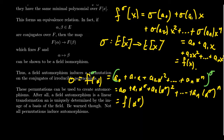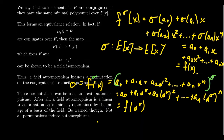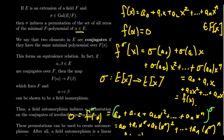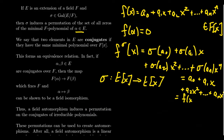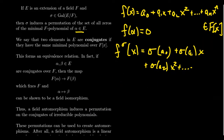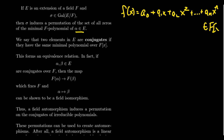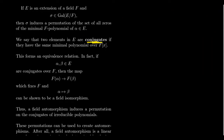So sigma induces a permutation on the roots of the minimal polynomial — an irreducible polynomial. This is what we call conjugates. We say that two elements of a field are conjugates if they have the same minimal polynomial. What this says is that if you take the conjugates defined by an F polynomial, sigma induces a permutation on those. You can scramble up the conjugates of the same minimal polynomial, but that's the worst that sigma can do.